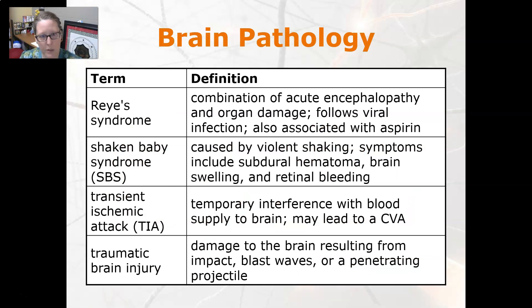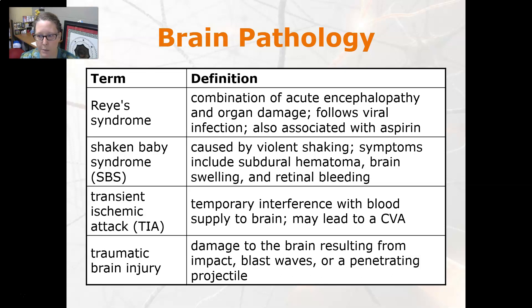Continuing brain pathologies: Reye's syndrome is a combination of acute encephalopathy and organ damage. It follows a viral infection and is associated with treating fever with aspirin, which is why we don't recommend giving aspirin to children. Shaken baby syndrome is caused by violent shaking; symptoms include subdural hematoma, brain swelling, and retinal bleeding.